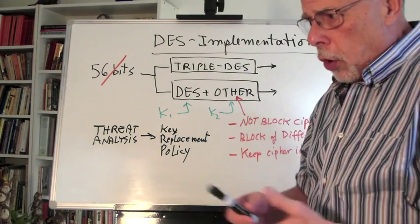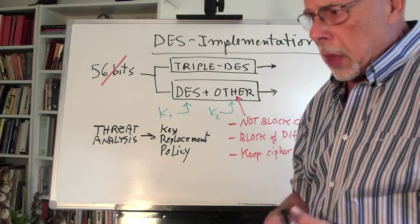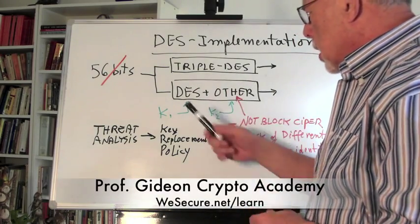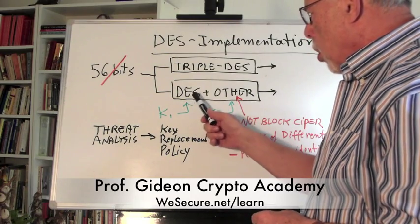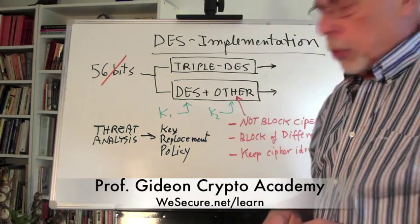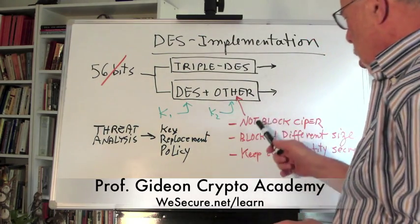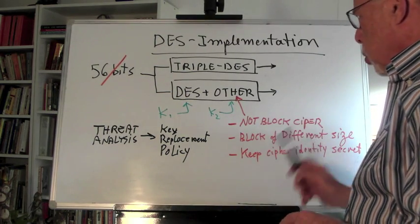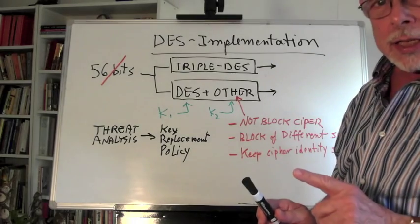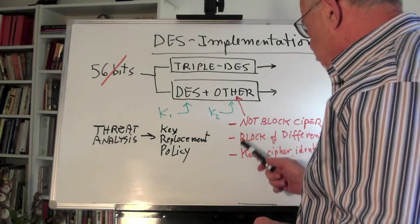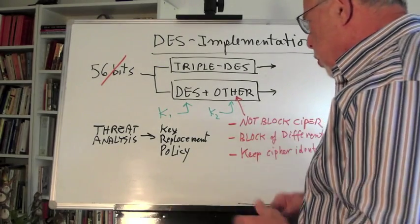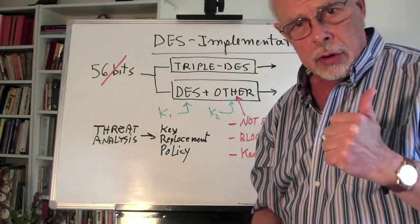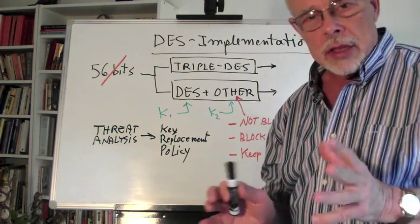If you already go through the effort of re-encryption and you need to maintain two keys — like in Triple DES — use them on DES plus another cipher. We recommend not a block cipher if you can. If you use a block cipher, use a block of a different size.